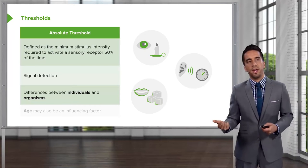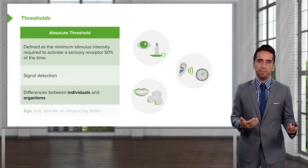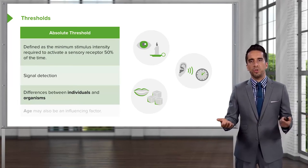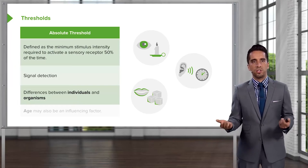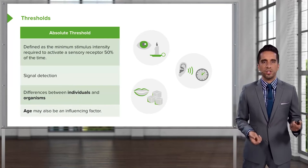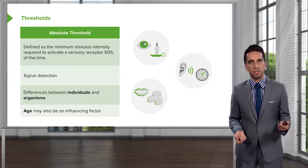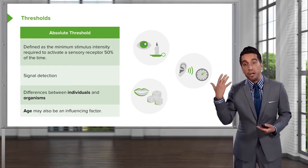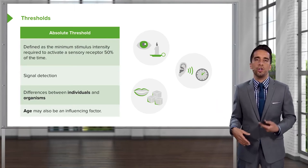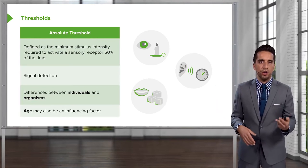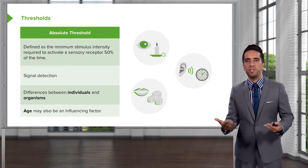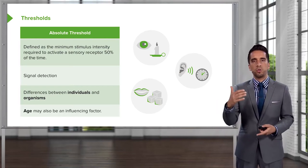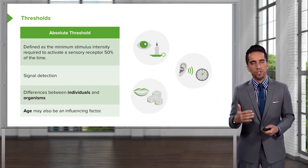As you get older, your machinery starts to slow down and it's not as great, so age can be an influencing factor. As you get older, your hearing is not as good, your eyes aren't as good, it's harder for you to see things. So your absolute threshold can shift as well.